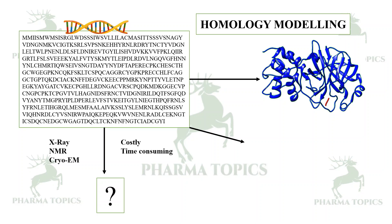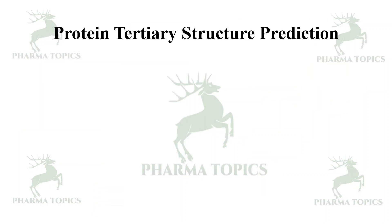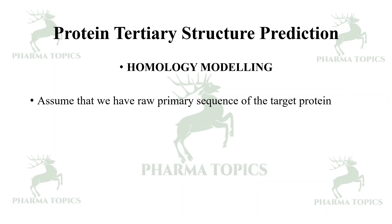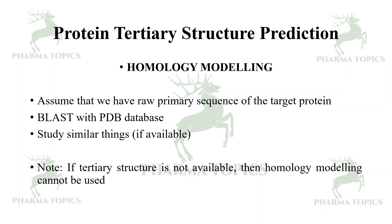The solution is that with the help of computers and online servers you can build this — and that is called homology modeling. First you have to BLAST the sequence and search for identical proteins which are related to it. Then you can do homology modeling or threading. Assume that we have a raw primary sequence of the target protein; BLAST it with the PDB database to find similar proteins. If similar proteins are available that share sequences with this protein, then you can study those.